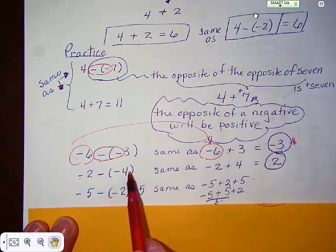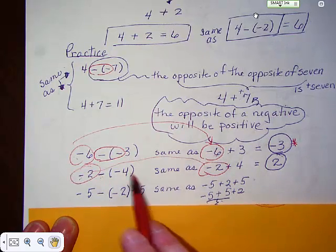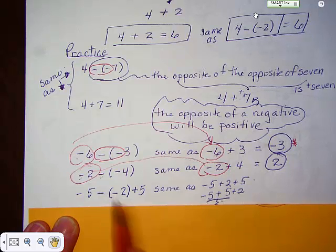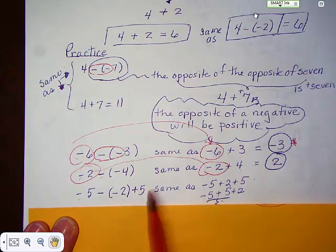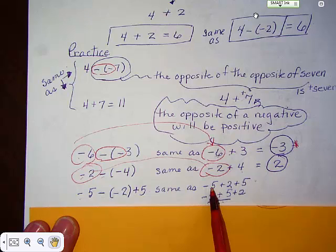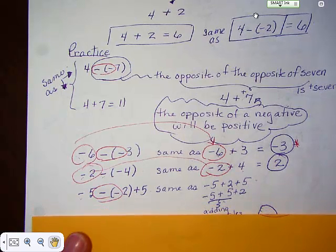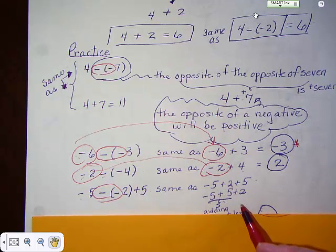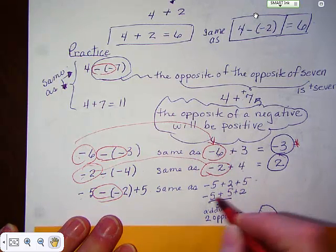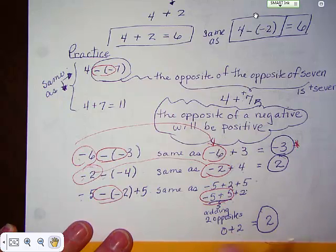Negative 2 minus a minus 4 is the same as negative 2 plus 4 — this number does not change, but the two negatives in a row make the 4 positive. Negative 5 minus minus 2 plus 5 is the same as negative 5: two negatives in a row make that a positive 2, plus 5. Using the commutative property, we get negative 5 plus 5 plus 2. Negative 5 plus 5 gives you 0, plus 2 equals 2.